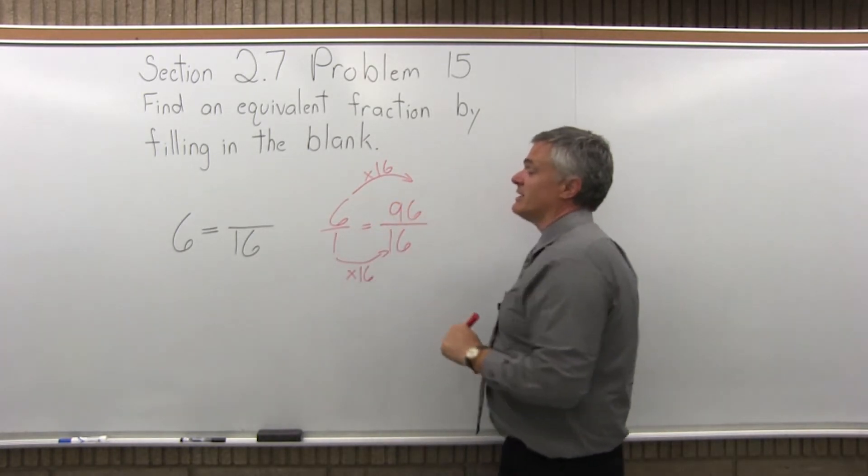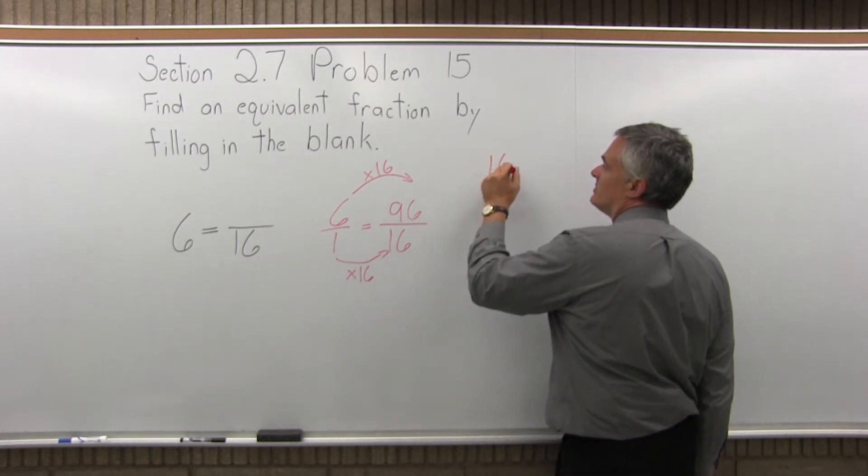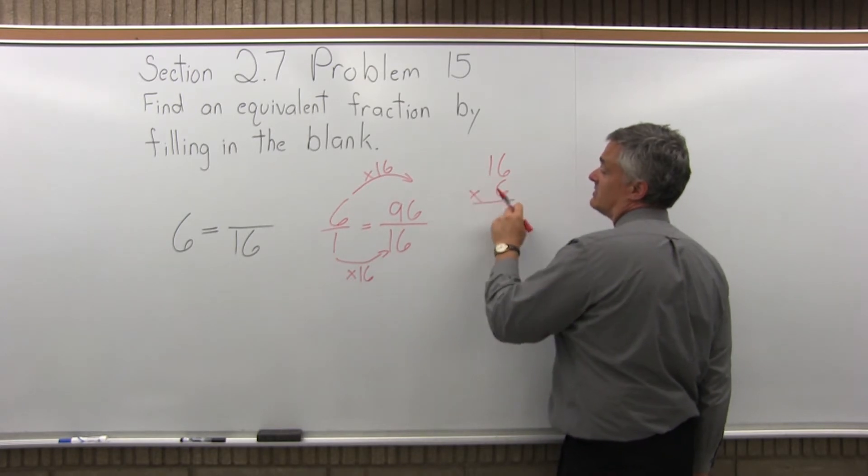Now, I can multiply that and I see that it's 96 without writing it out. But let's say you're not really sure. Just take the few seconds that it's going to take, go off to the side and write it out. 16 times 6.